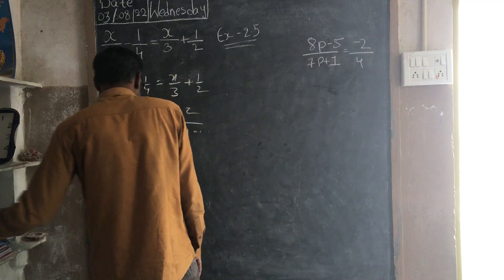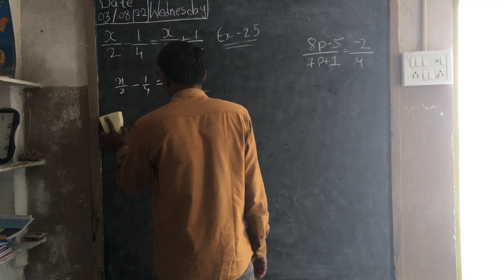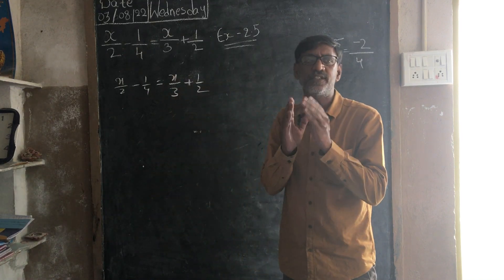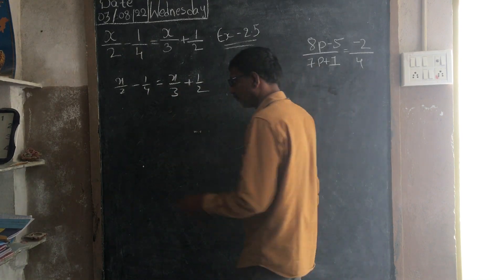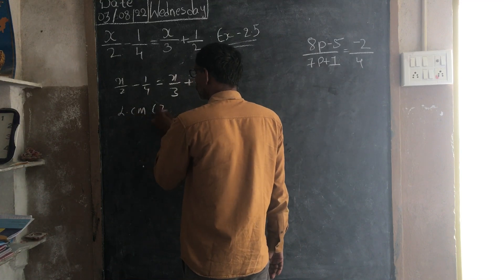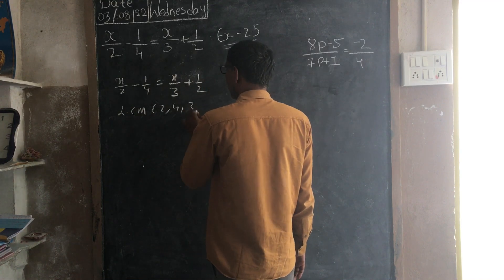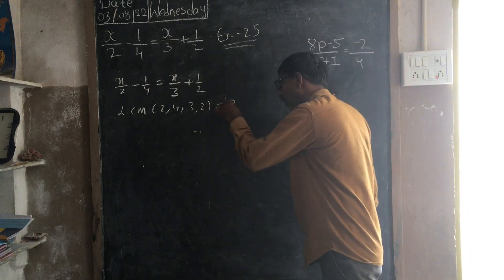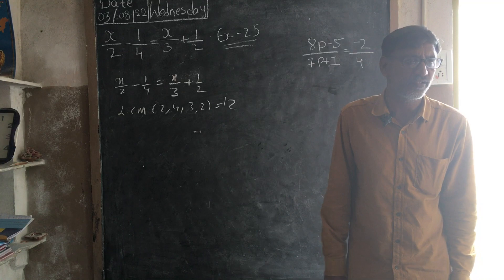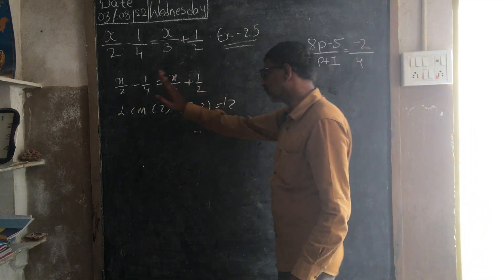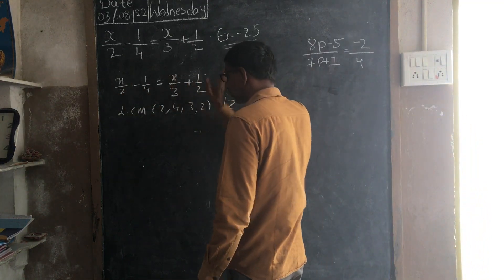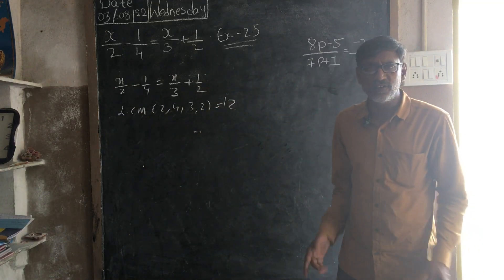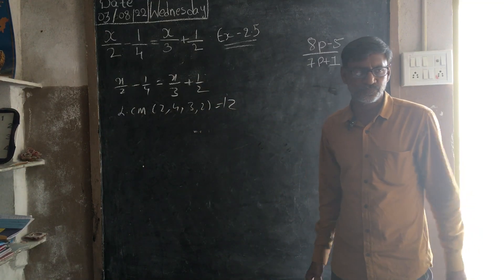Take the LCM of all denominators of this linear equation and multiply it with each fraction. So, LCM of 2, 4, 3 and 2 is, sorry, 12. 12 is my LCM. 12 multiplied with this one, this one, this one and this one. To eliminate the denominators and we will get a simple linear equation.